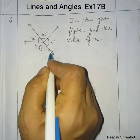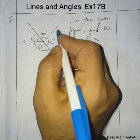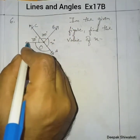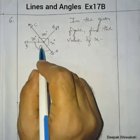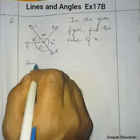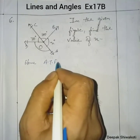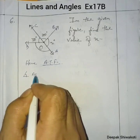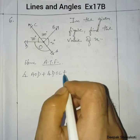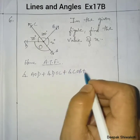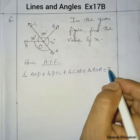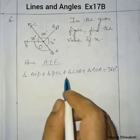Here we have rays OA, OB, OC, and OD. We need to find angle AOB. According to the figure, angle AOD plus angle DOC plus angle COB plus angle BOA equals 360 degrees — this is the sum of angles at a point.